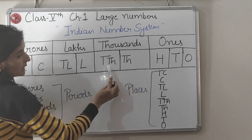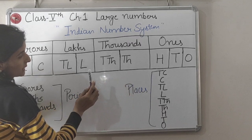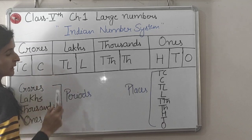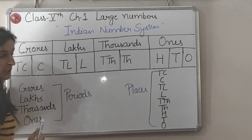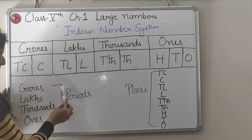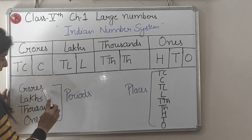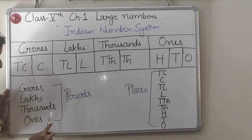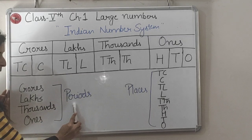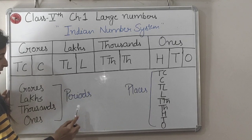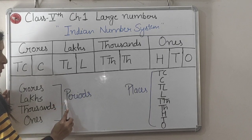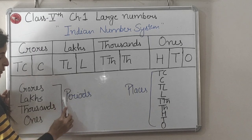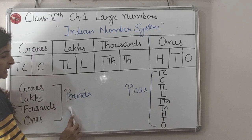The places are: thousand, ten thousand, lakhs, ten lakhs, crores, ten crores. And remember one thing — crores, lakhs, thousands, and ones are all periods. We will not say them places; these all are periods.